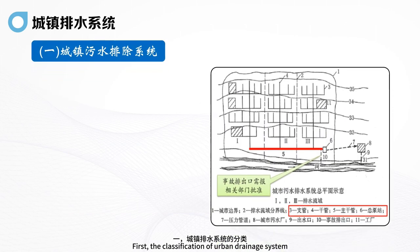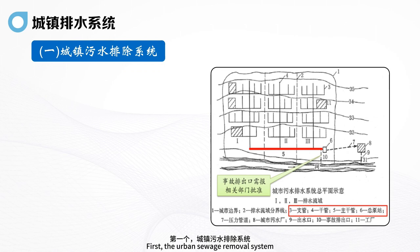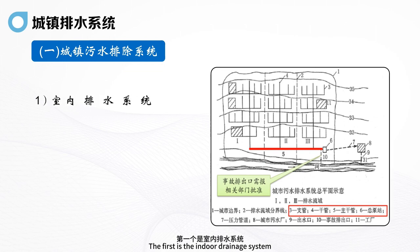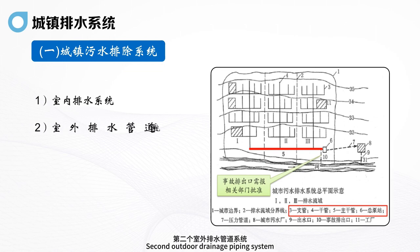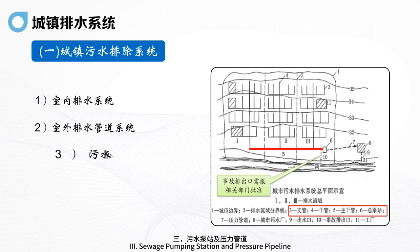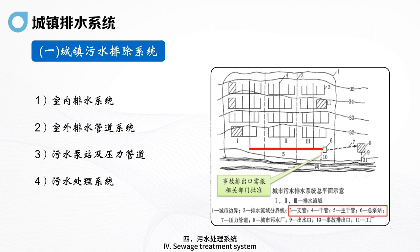The first type is the urban sewage removal system, which usually consists of five parts: the indoor drainage system; the outdoor drainage piping system; the sewage pumping station and pressure pipeline; the sewage treatment system; and the sewage discharge system.